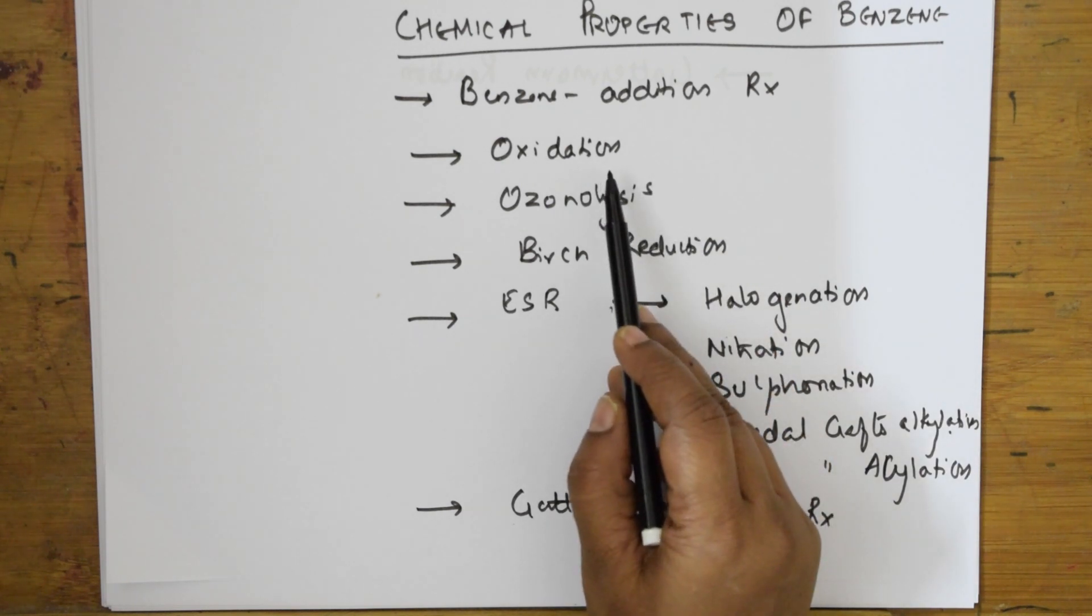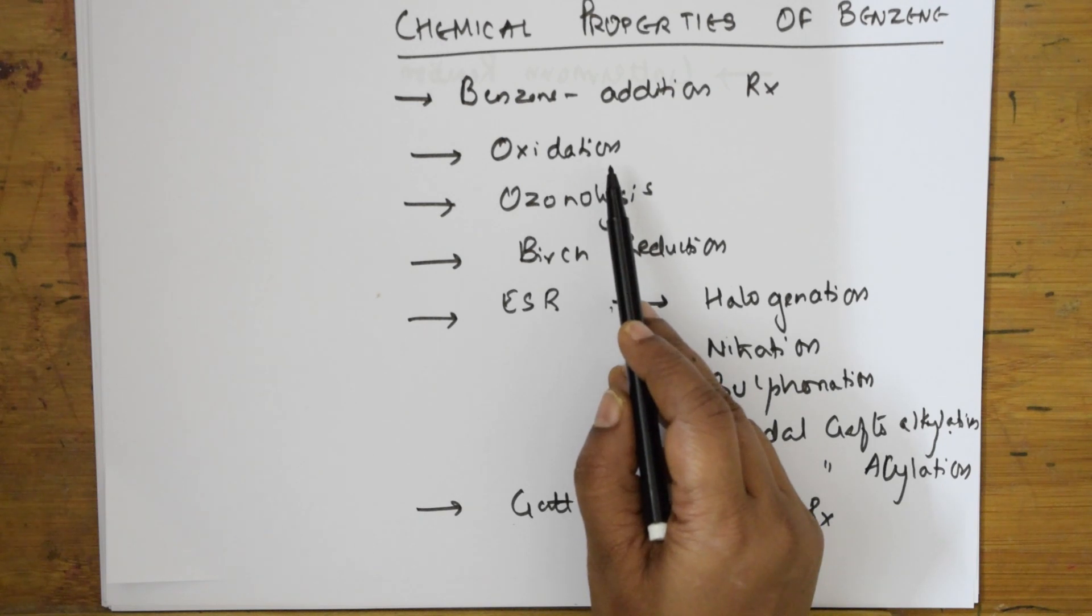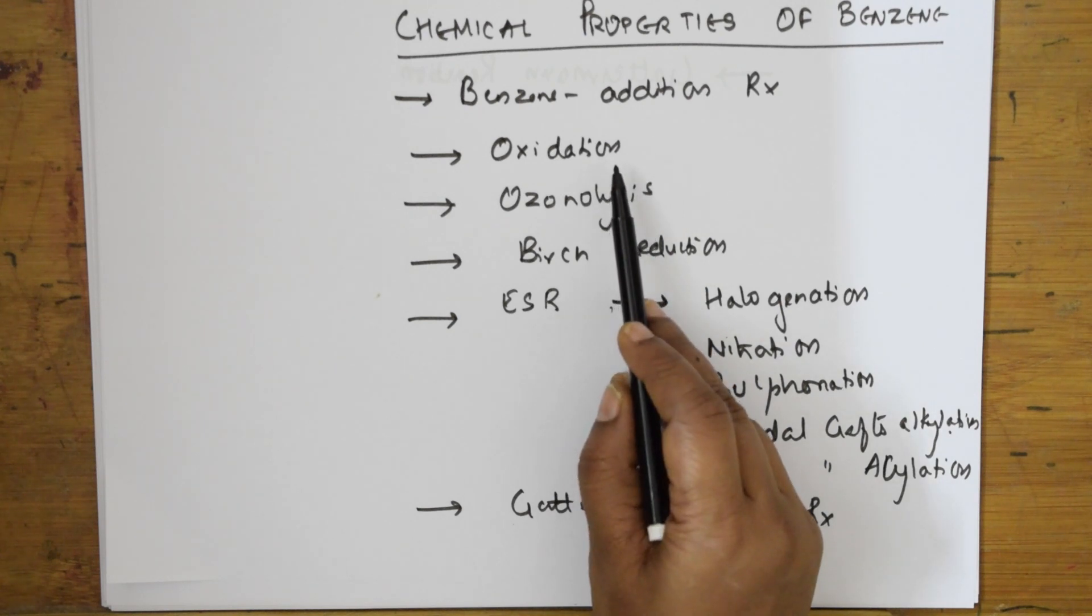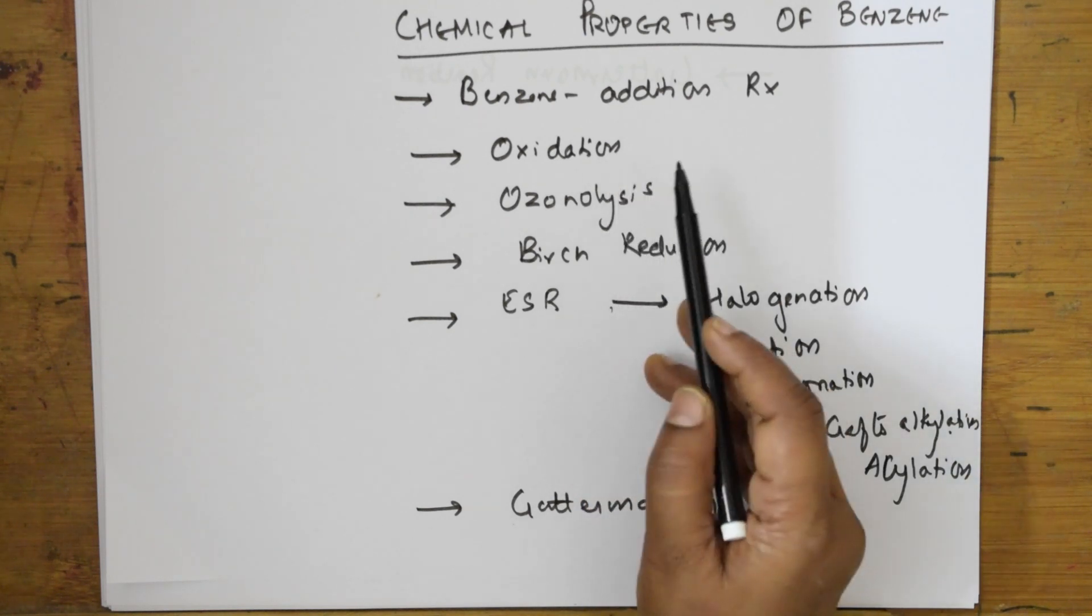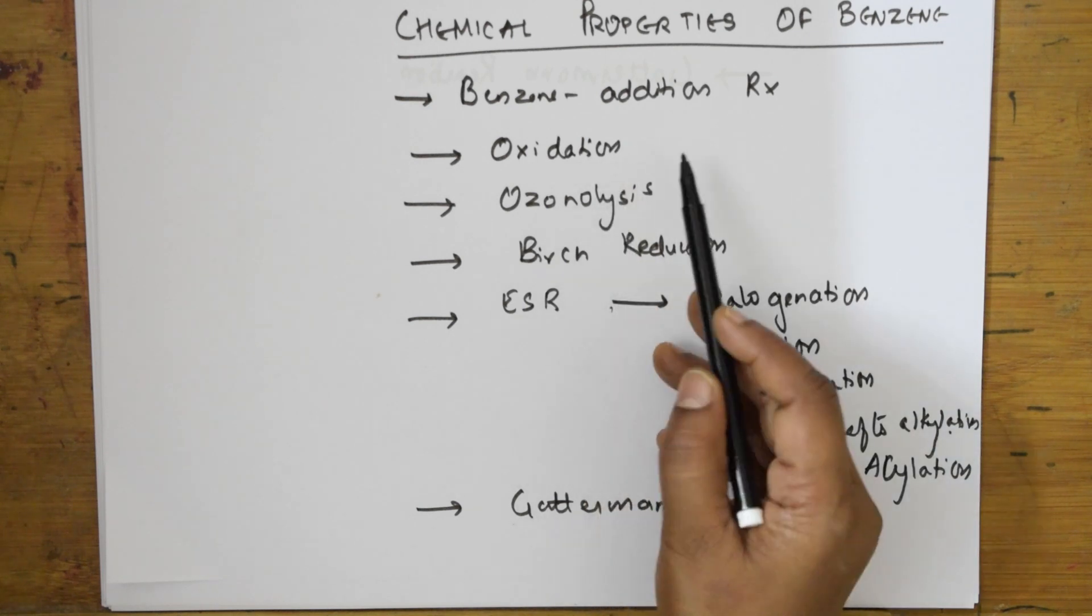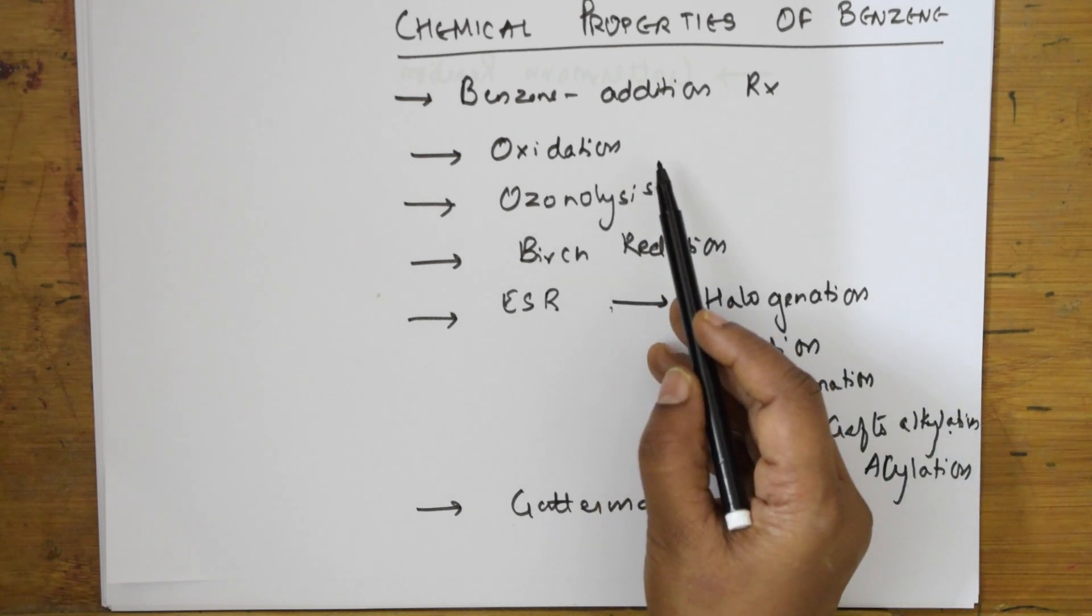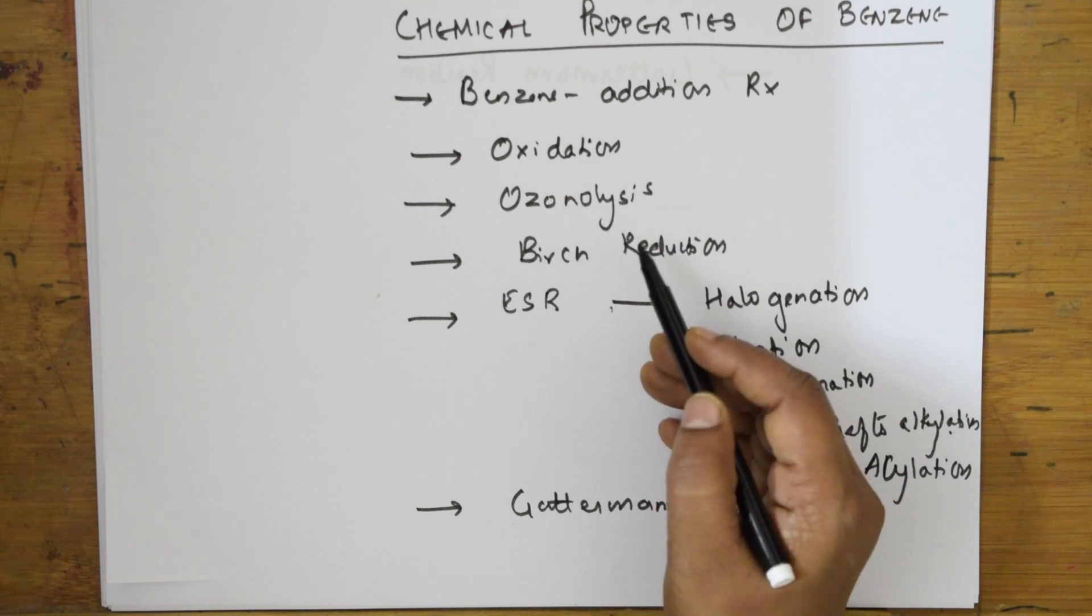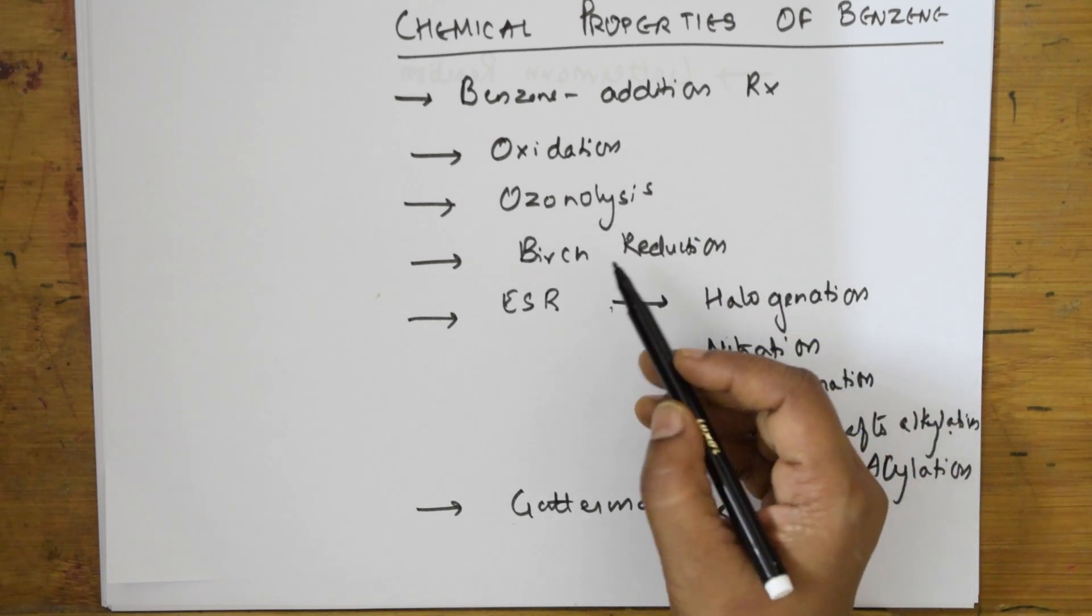After that I'll be teaching you oxidation reactions. Whenever you're studying oxidation reactions you should explain in the presence of strong oxidizing agents - potassium permanganate, alkaline potassium permanganate, acidified or acidic potassium dichromate. You can also use in the presence of a catalyst, vanadium pentoxide.